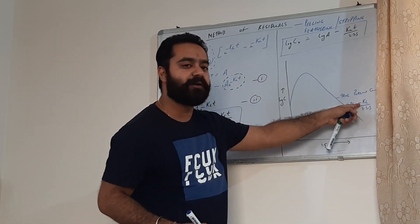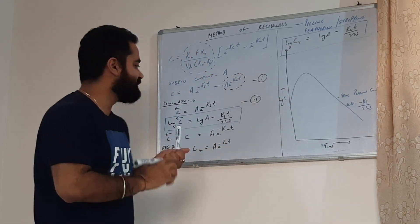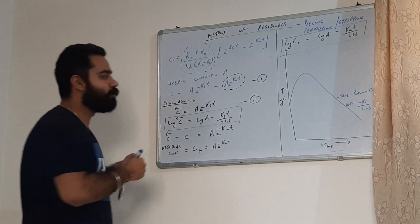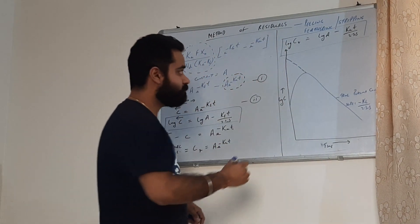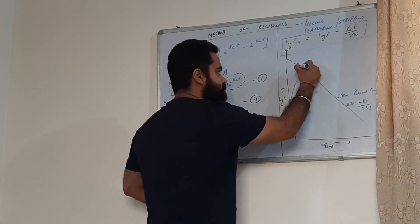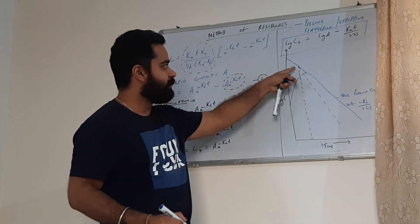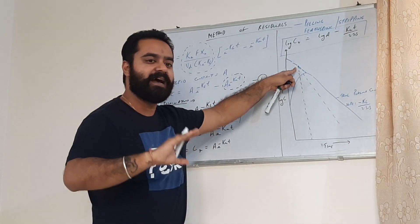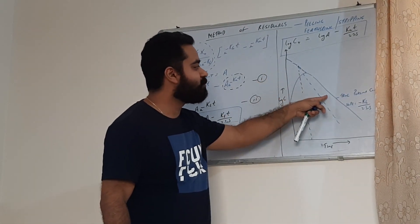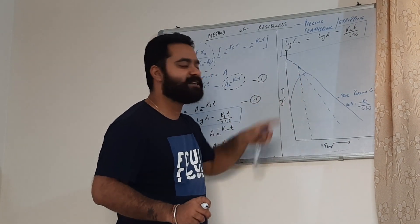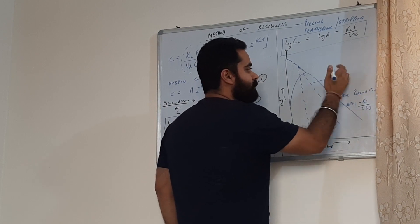If we back extrapolate this line — extending it towards the y-axis — we are determining C with the reverse arrow, the back extrapolated concentration. A point of intersection is achieved where the true plasma concentration on back extrapolation intersects with the residual concentration. This second curve is the residual curve — a plot of log Cr with time.